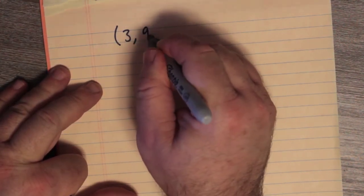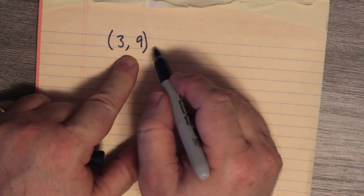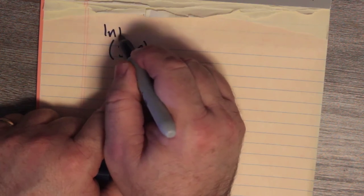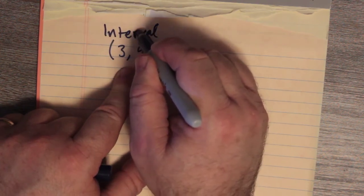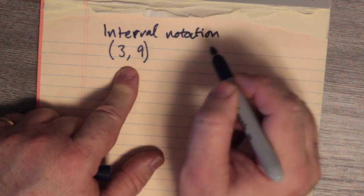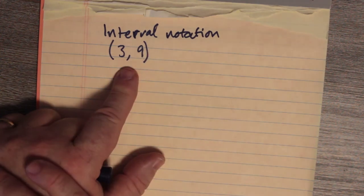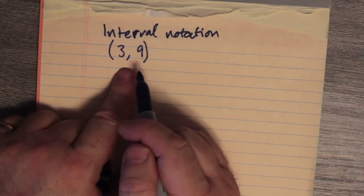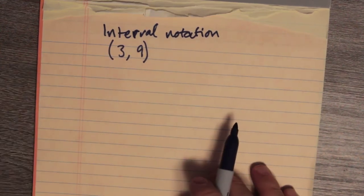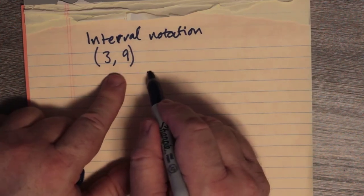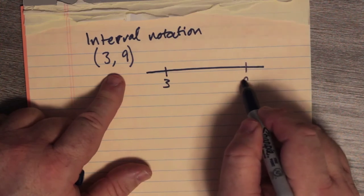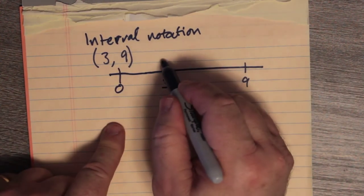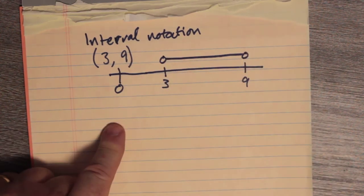Let's say we have the interval (3, 9). This is once again interval notation. Please do not confuse this with a Cartesian point. This is an interval going from 3 to 9, not including the points 3 and 9. So we can have the number 3 and the number 9 on the number line, and we draw our number line going from 3 to 9, not including the endpoints themselves.